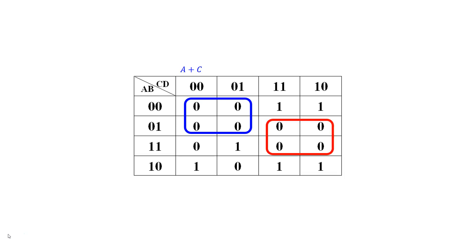We have another group of four where B is equal to 1 and C is equal to 1, while A and D change across those four cells. Since B equals 1, we write not B, and since C equals 1, we write not C — giving us not B or not C. There's a visible group of four, but since all zeros there are already covered, we skip it to avoid an extra expression.